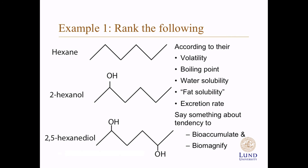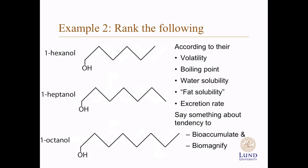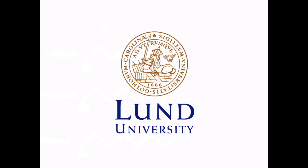The solution is in a separate screencast. Here we have hexane, 2-hexanol, and 2,5-hexanediol, and you should rank these according to their volatility, boiling point, water solubility, fat solubility, and excretion rate, and then say something about their tendency to bioaccumulate and biomagnify. In the second example, we have 1-hexanol, 1-heptanol, and 1-octanol, and you should rank them in the same way.